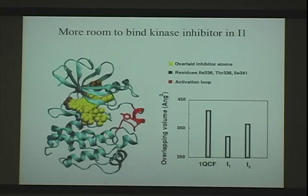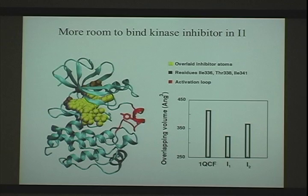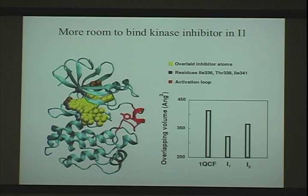One thing we haven't explored very deeply but that is putatively interesting is examining the docking of ligands and inhibitors to these intermediates. We just tried dumping known inhibitors into the different intermediate states. If you dump the inhibitors into the inactive state, we have a lot of bad contacts, which means the pocket is a bit more open in the intermediate. The second intermediate has even fewer bad contacts than the inactive state — so that could be an interesting target for drug docking.